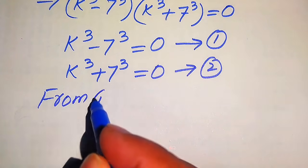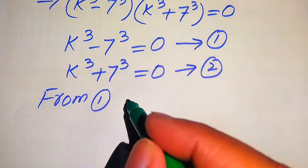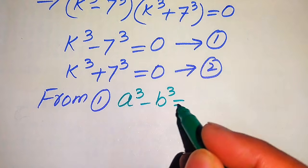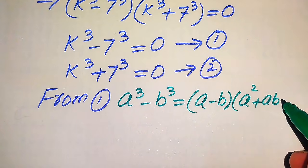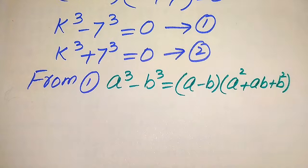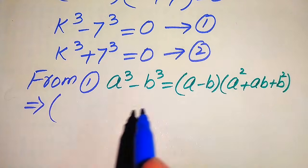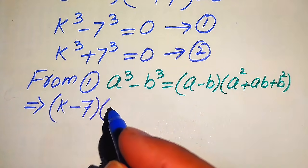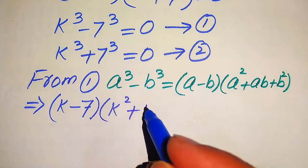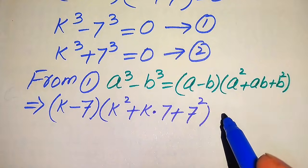Case 1: k cubed minus 7 cubed equals 0 (equation 1). Case 2: k cubed plus 7 cubed equals 0 (equation 2). We focus on equation 1 first. Since equation 1 is a cubic equation, we use the cubic formula: a cubed minus b cubed equals a minus b times a squared plus ab plus b squared.